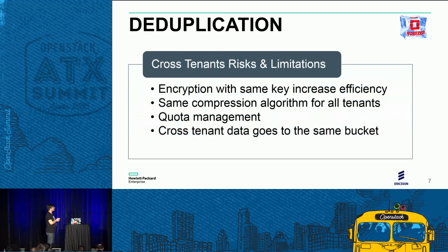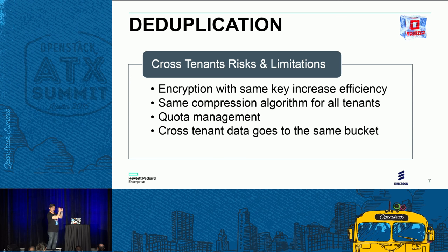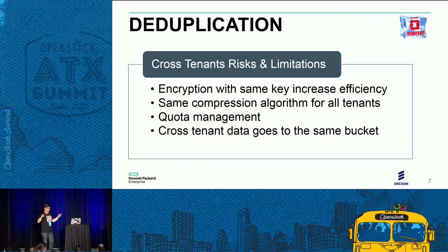There are risks and limitations for cross-tenant deduplication. Encryption is a problem: if every tenant encrypts data with their own key, when another tenant needs to restore a block encrypted with a different tenant's key, they cannot restore it because they don't have the key. So using the same encryption key across all data increases efficiency but is a risk and limitation.